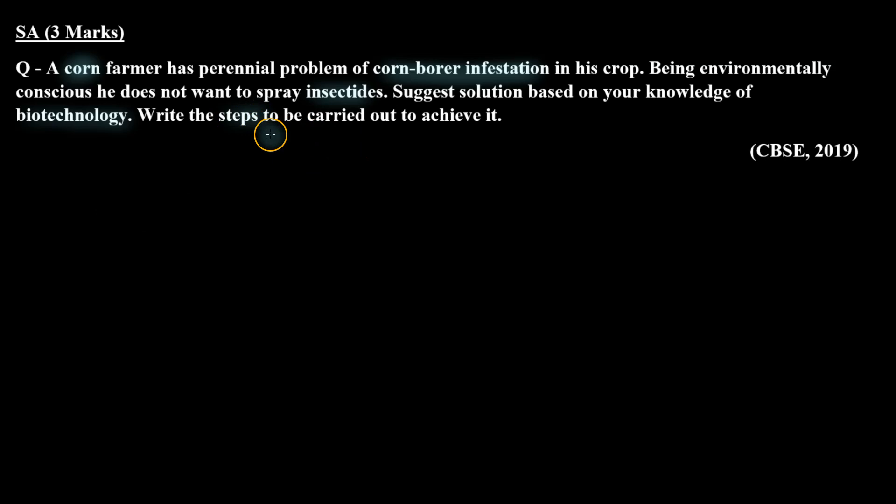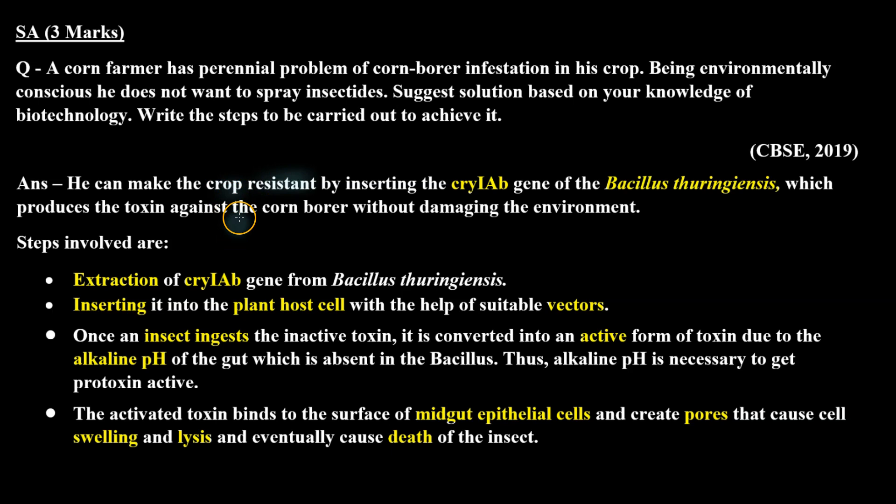The farmer can use resistant crops developed using the cry1AB gene from Bacillus thuringiensis, because the cry1AB gene produces a toxin specifically active against the corn borer. The first step is to extract the cry1AB gene from Bacillus thuringiensis.